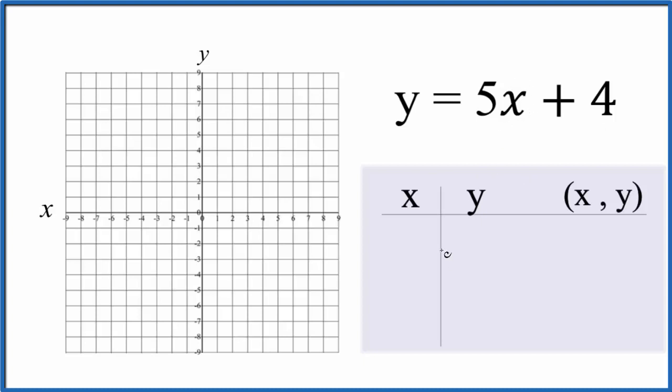We can choose any values to put in for x. Zero is always a good one, because 5 times 0, that's 0 plus 4. So we would have this point. This is our first point that we'll graph.